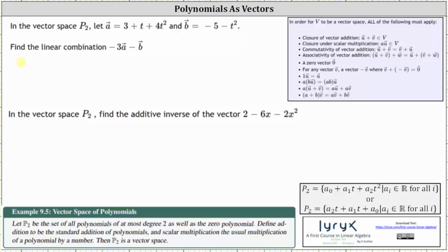So for the first part, to find the linear combination -3a - b, we simply substitute the polynomials for the vectors, which gives us -3 times vector a, which is the quantity 3 + t + 4t², and then minus vector b is minus the quantity -5 - t².